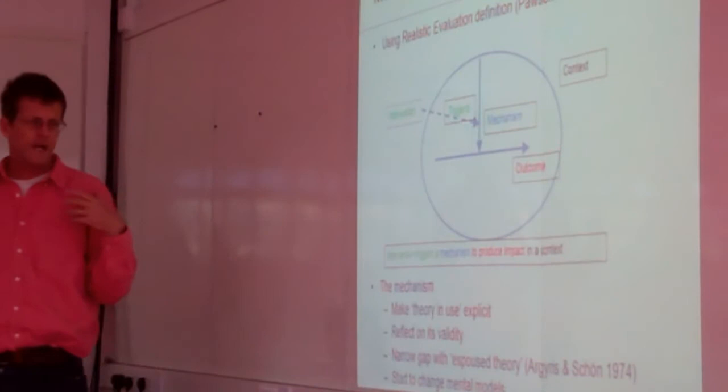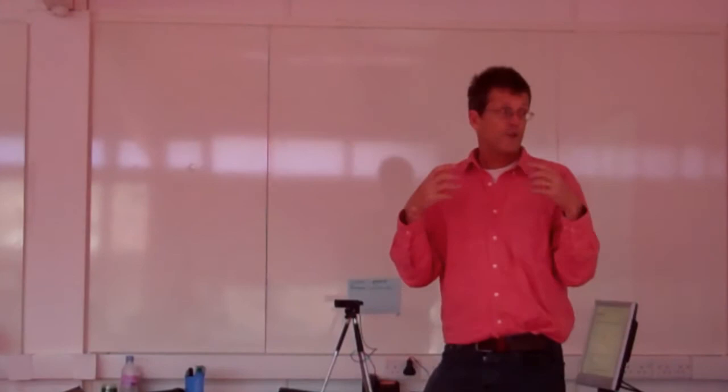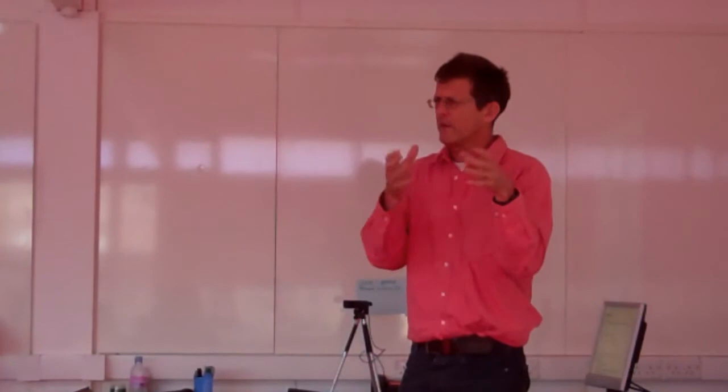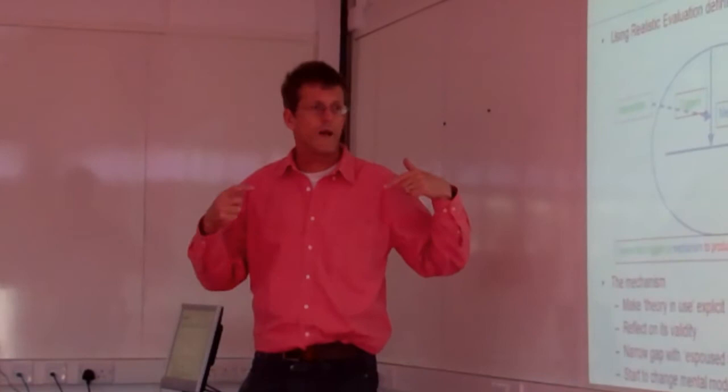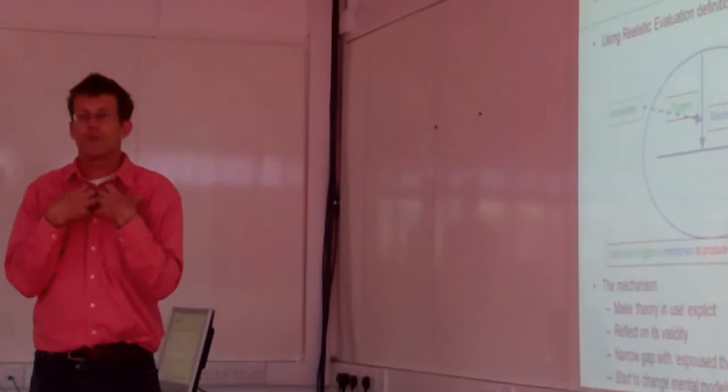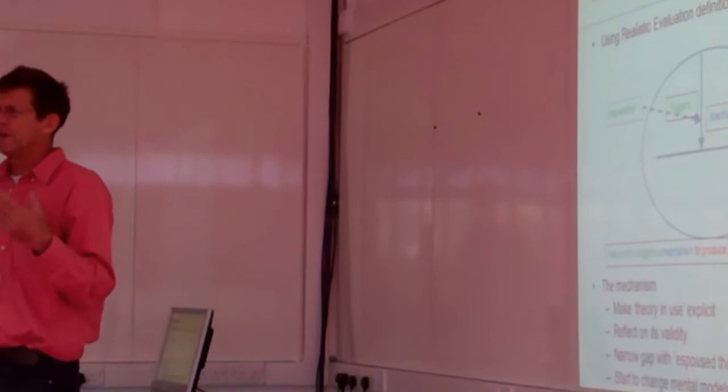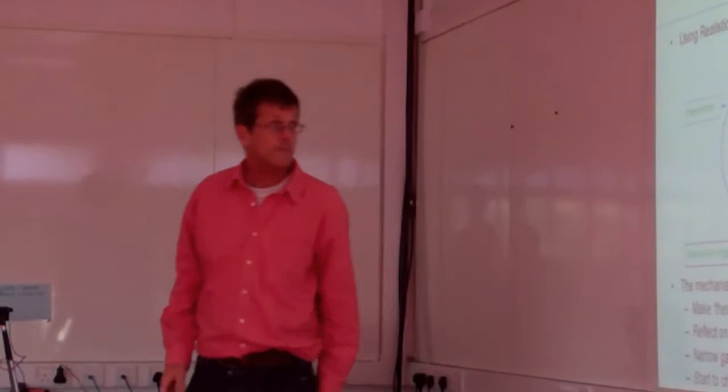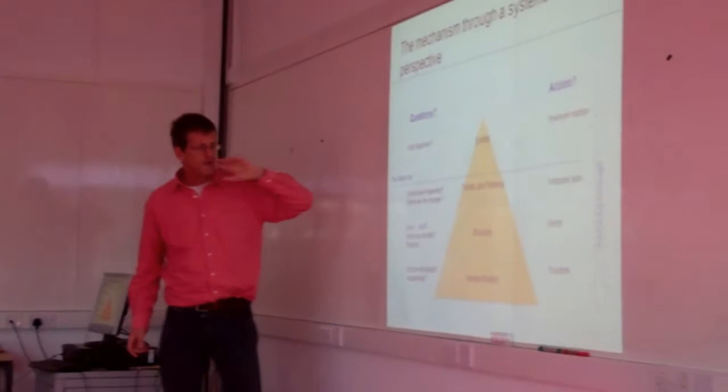And it's this mechanism that in our case, what we want the mechanism to do is to get people to think and engage and change their mental models. And unpacking this a little bit more, the way we've been going about doing it is we want to make an approach which makes these mental models explicit. So to get people to actually take their theory in use, how they think the world works and make that explicit. Then reflect on its validity. Do the way people think things are working, does it match with what's actually happening? And as a result, you narrow this gap between people's theory in use and the espoused theory. The espoused theory is just another term for what you see written in project proposals and programs. How we say to others, how we think change is going to happen.